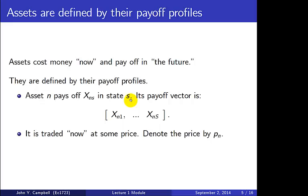If we think across all states, we have a payoff xn1 in state 1, xn2 in state 2, and so forth up to state capital S. We can stack all these payoffs across all S states into a row vector — the payoff for state 1, state 2, and so on up to state S. This vector tells you how payoffs vary across states. To buy the asset today, you also pay a price, written as little p subscript n.